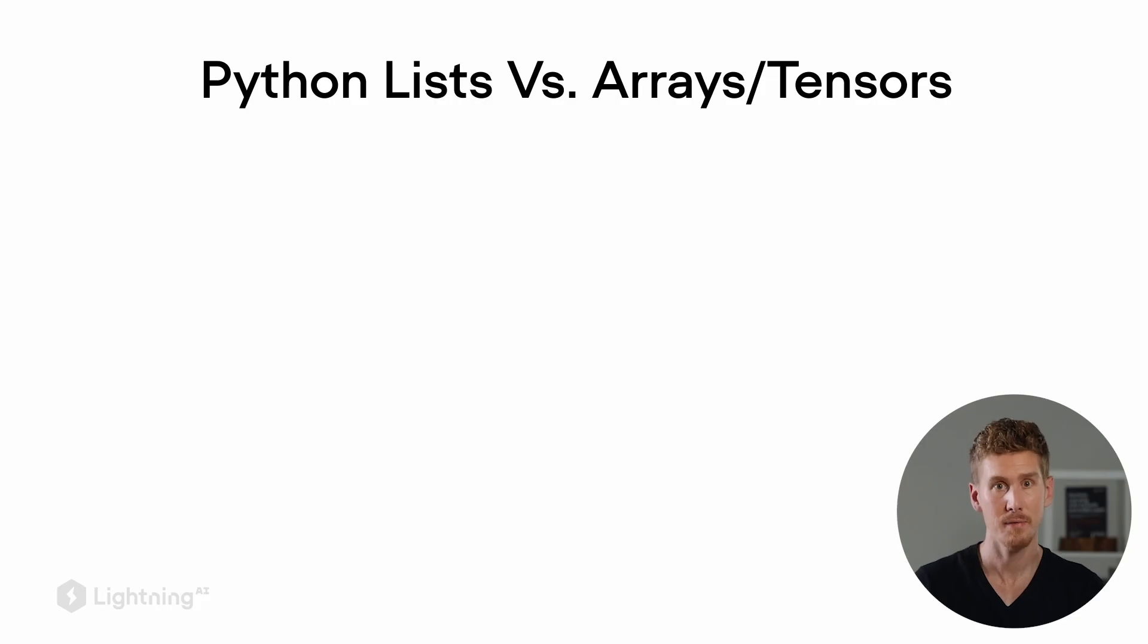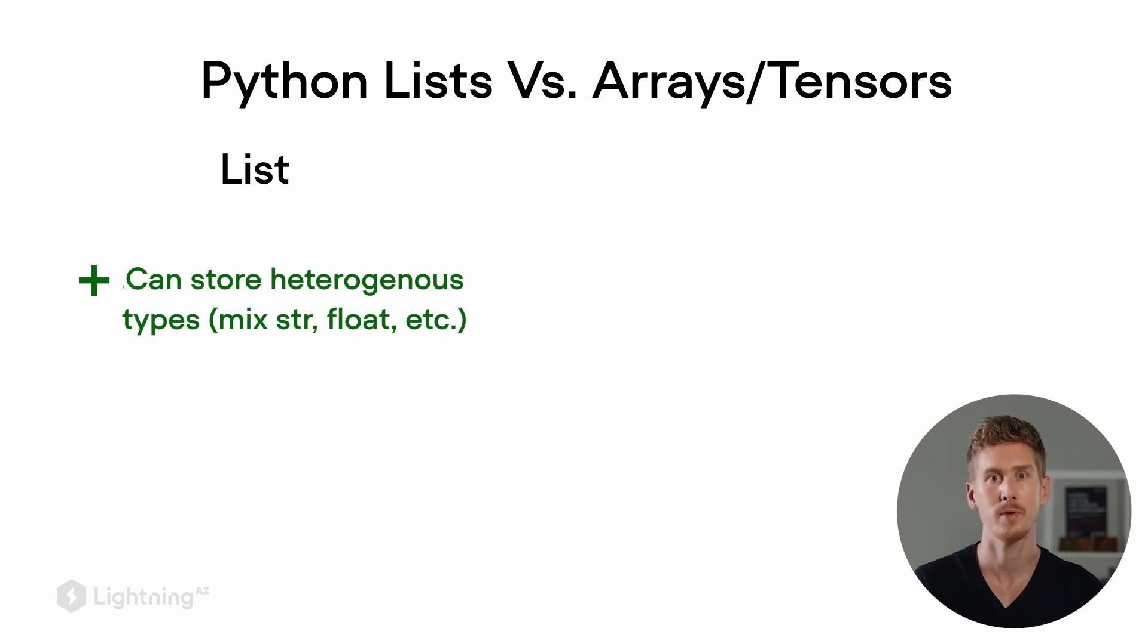And you may also now wonder how are tensors and arrays different from regular Python lists. So if you worked with Python lists before, you know that Python lists can store heterogeneous elements. For example, you can store floats, strings, and other objects mixed in a list.